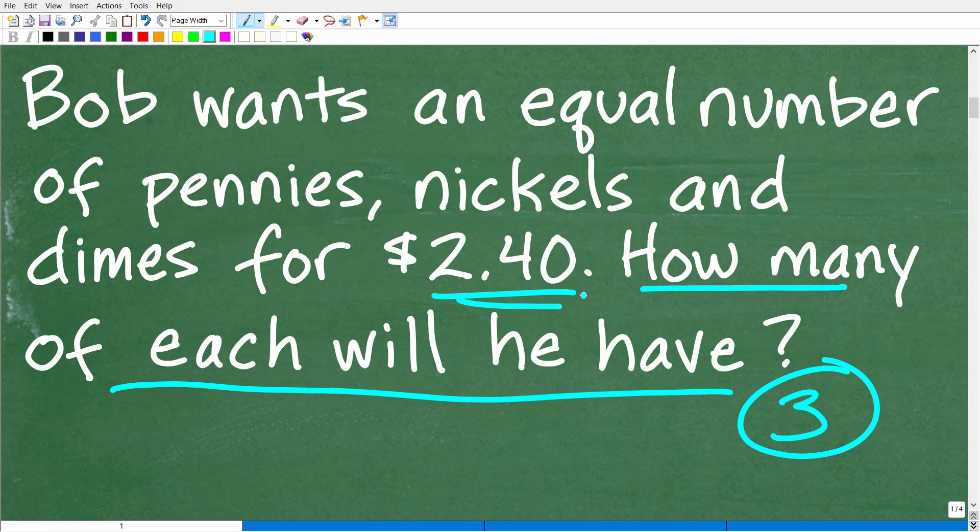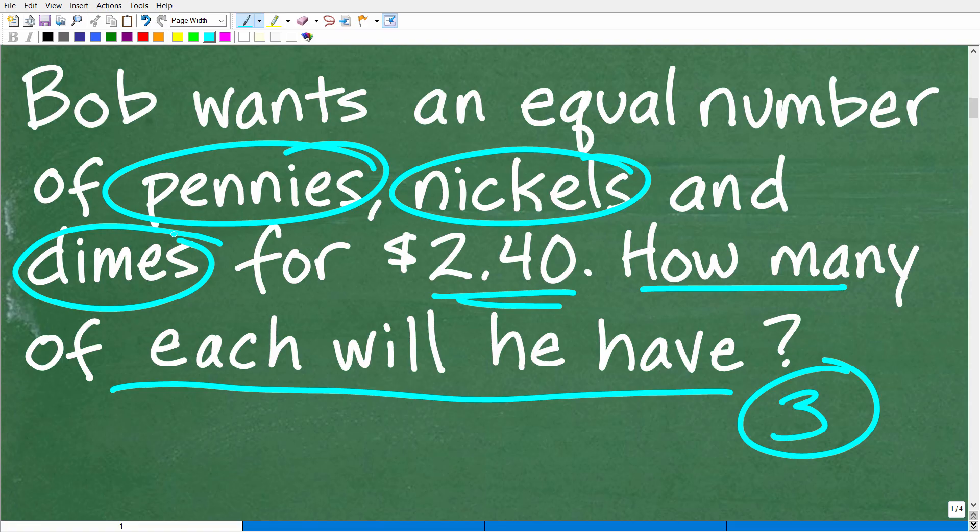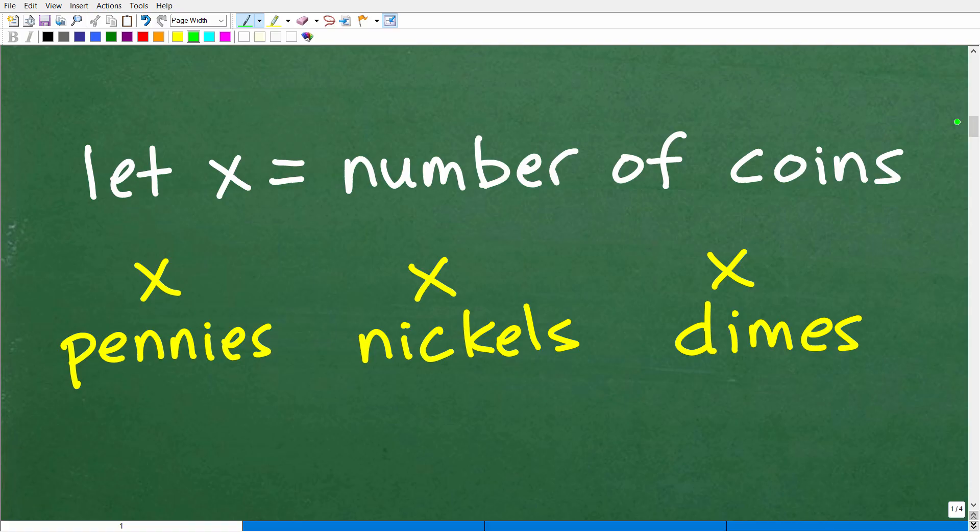We have Bob here with $2.40. He has some pennies, nickels, and dimes, and he wants an equal amount of each. The grand total has to add up to $2.40. One thing we could do here is just go through trial and error. This doesn't require any algebra. You could try one dime, one penny, one nickel and see if that adds up to $2.40. No. Start increasing the amount. The question involves an unknown value: how many. How many is a good indication that we want to use a variable, which means we're going to use algebra.